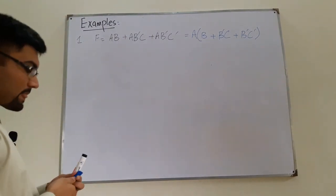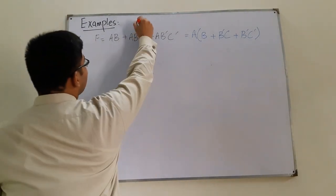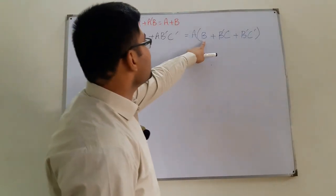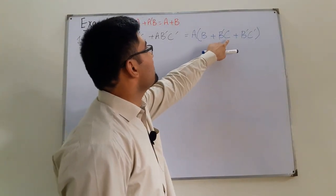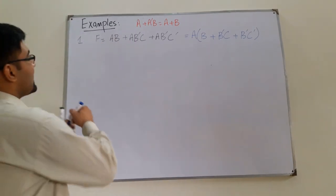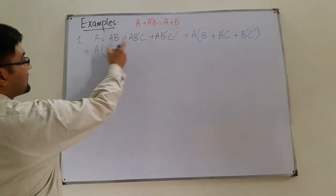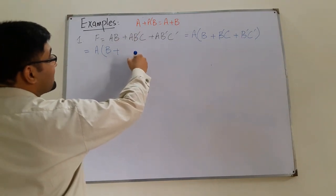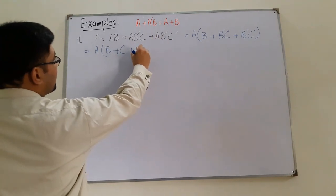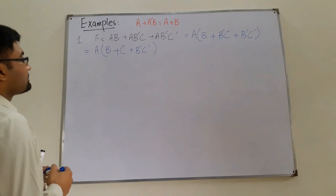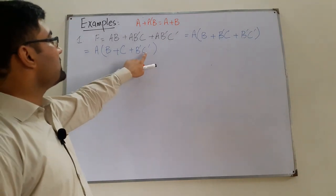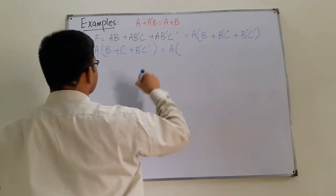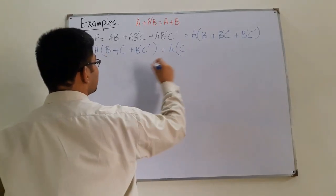In the last lecture I told you that a + a'b = a + b. So here B is the 'a' and C is the 'b', meaning B + B'C simplifies to B + C. Then applying the same property again to B + B'C': B is in its own place, C' comes in, giving B + C'.